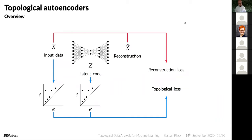The approach is: take some input data, run it through an autoencoder, compute the usual reconstruction loss, but additionally look at the input data on a batch level and the latent representation on a batch level to compute a topological loss. The goal is not only to reconstruct data well, but also to preserve topological information in the reconstruction.